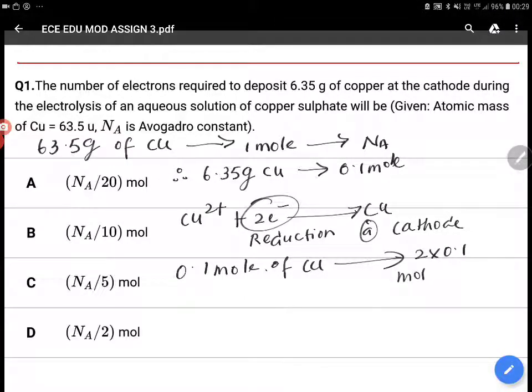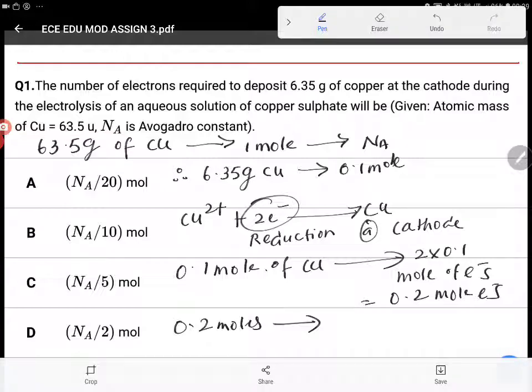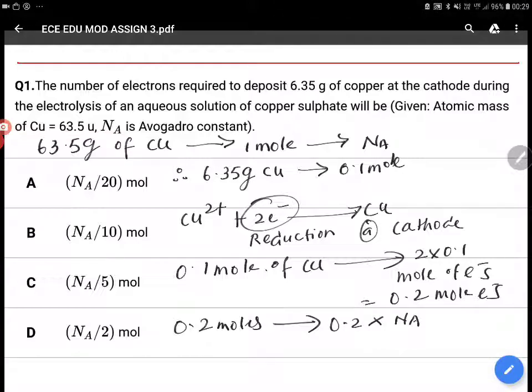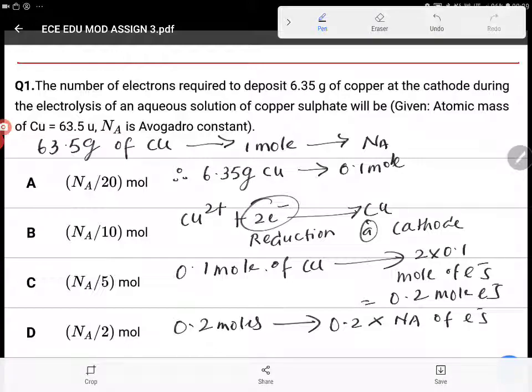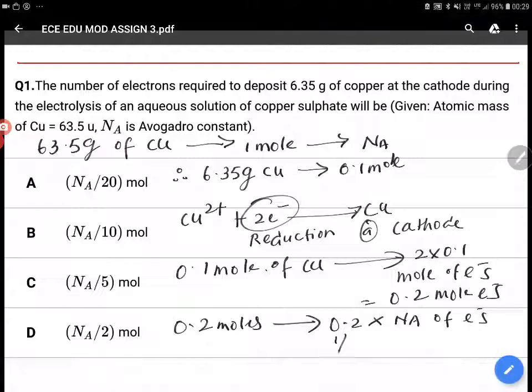That is equal to 0.2 mole of electrons. 0.2 moles means 0.2 into Avogadro number of electrons, converting mole to numbers. This can be written as 1 by 5 into Avogadro number of electrons. Therefore, option C is the correct answer.